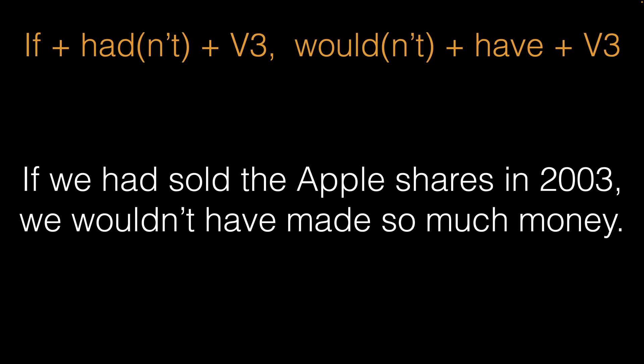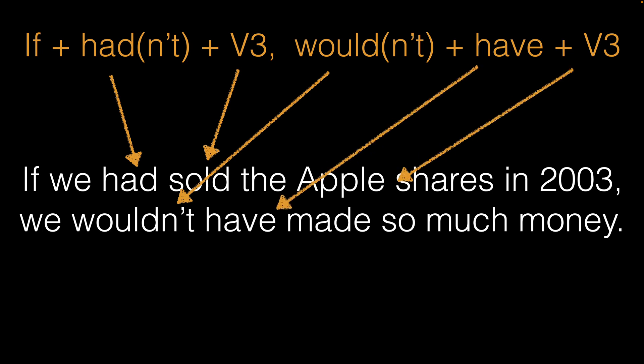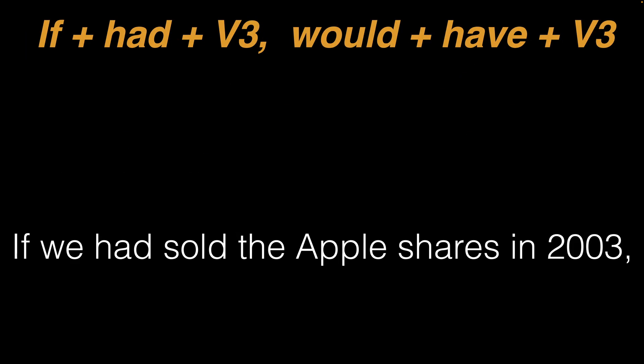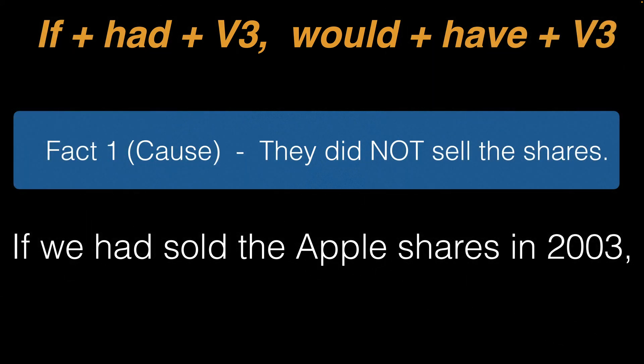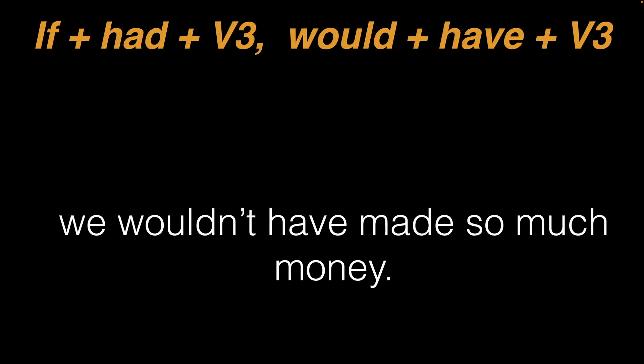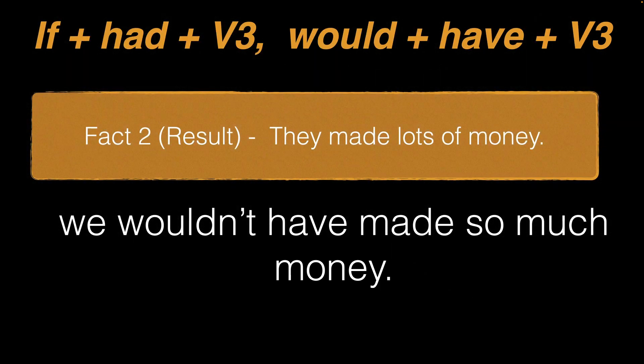Let's look at another version. This time we're a bit more happy about the past. 'If' plus 'had' verb three 'sold', 'would not have' verb three 'made'. Let's look at the cause statement: 'If we had sold the Apple shares in 2003' — fact: they did not sell the shares.